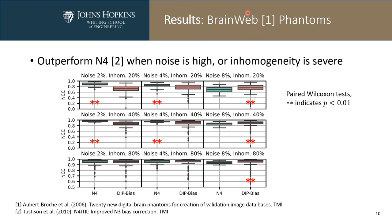We used a tool called BrainWeb to perform quantitative comparison between our algorithm and the popular conventional method N4, evaluating the performance of inhomogeneity correction. BrainWeb can simulate brain images with different levels of noise and severity of inhomogeneity. We used a paired Wilcoxon test to compare our method and N4, and found that our method can outperform N4 when the noise level is high or the inhomogeneity is severe, as shown in the last column.